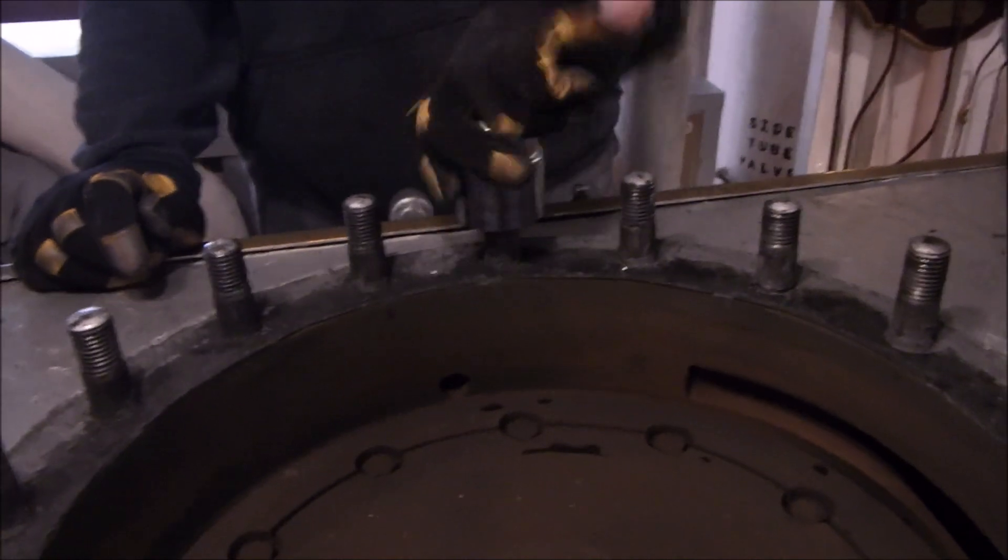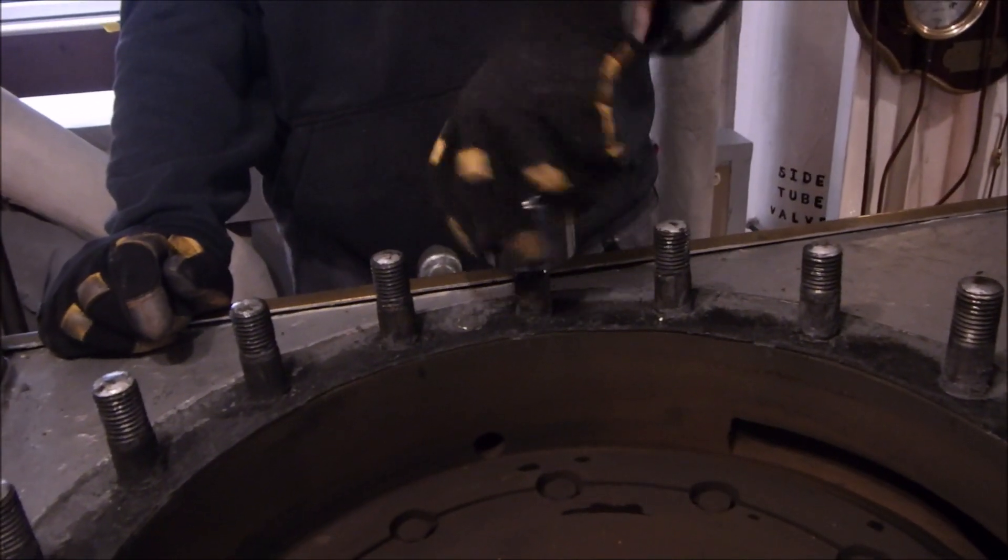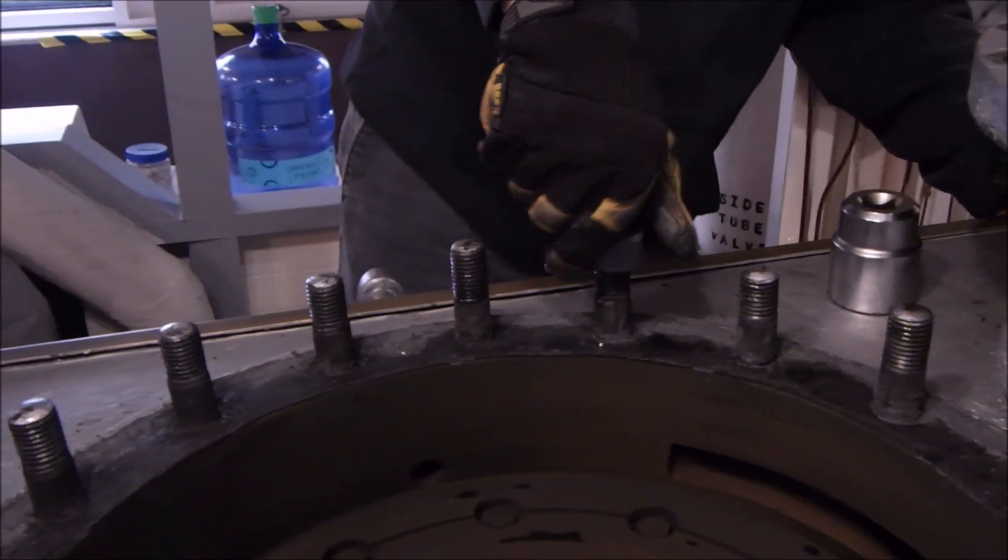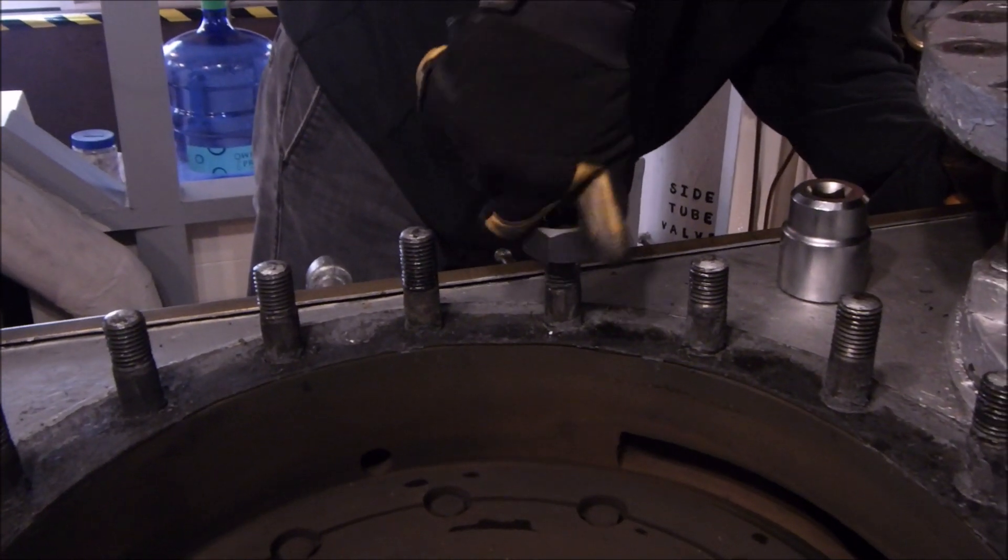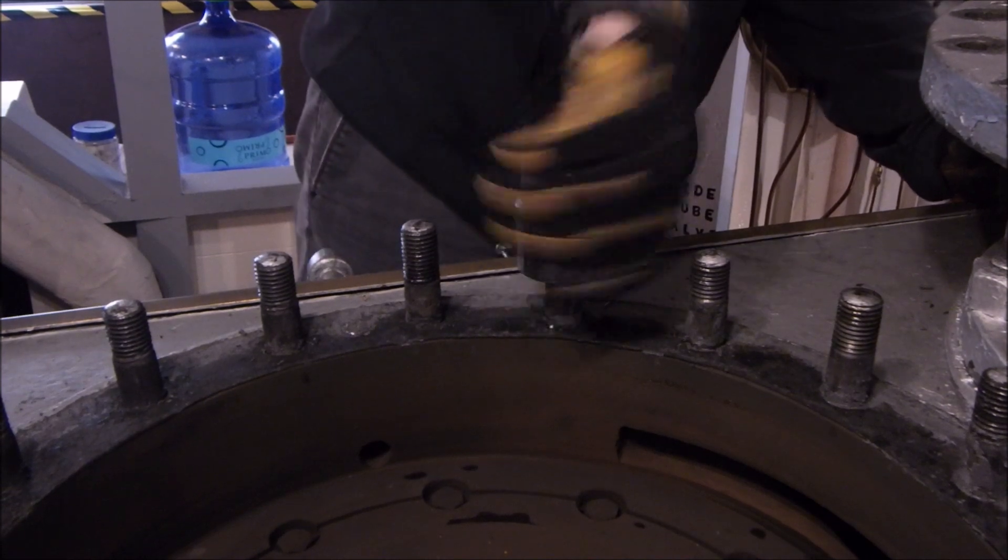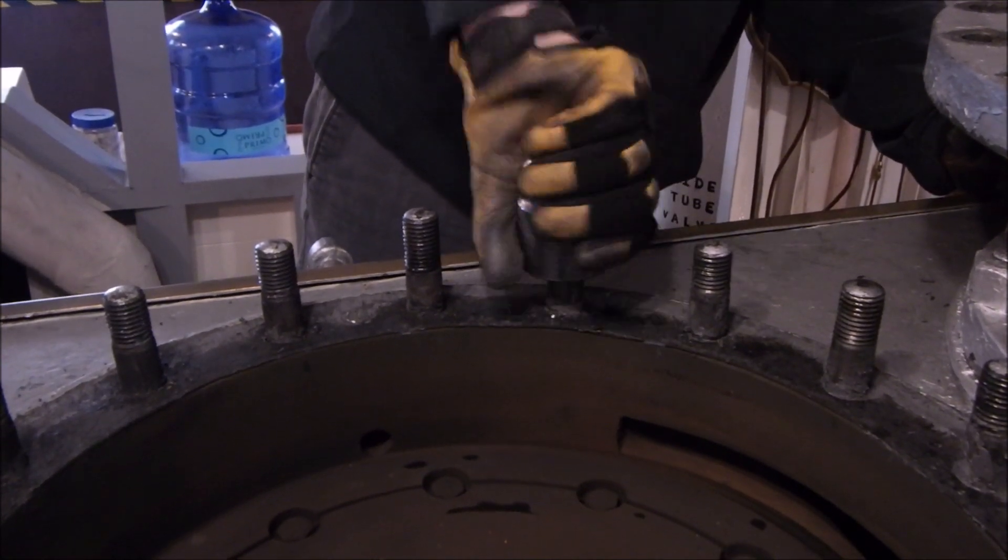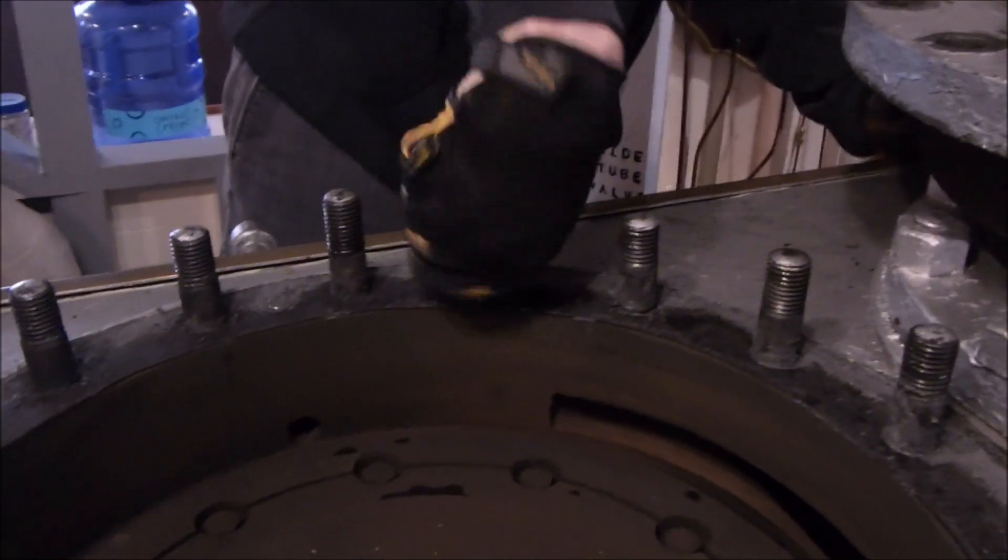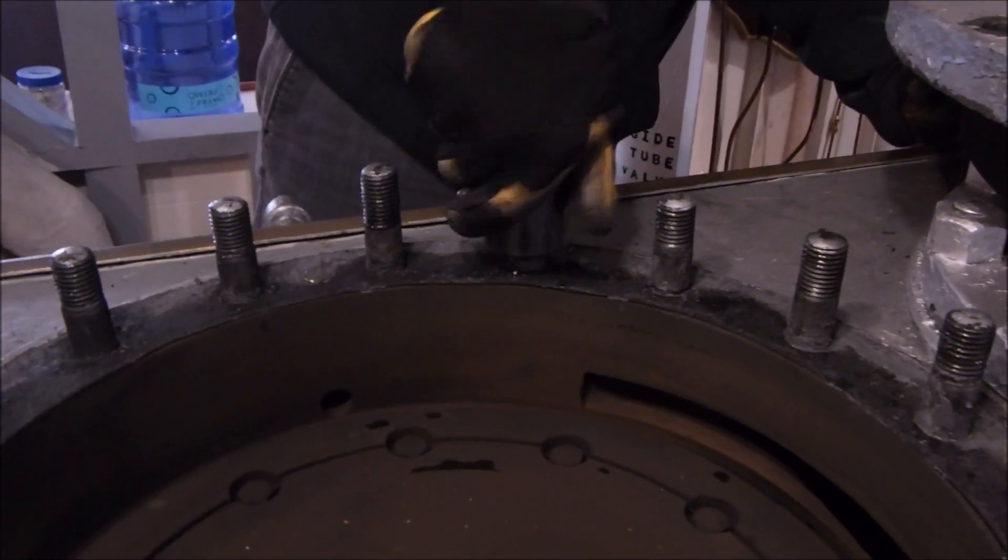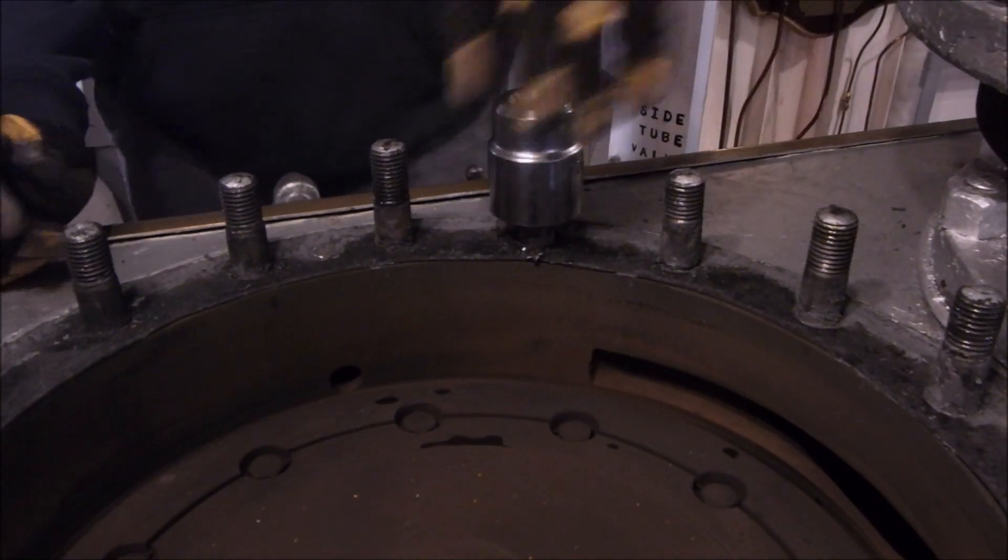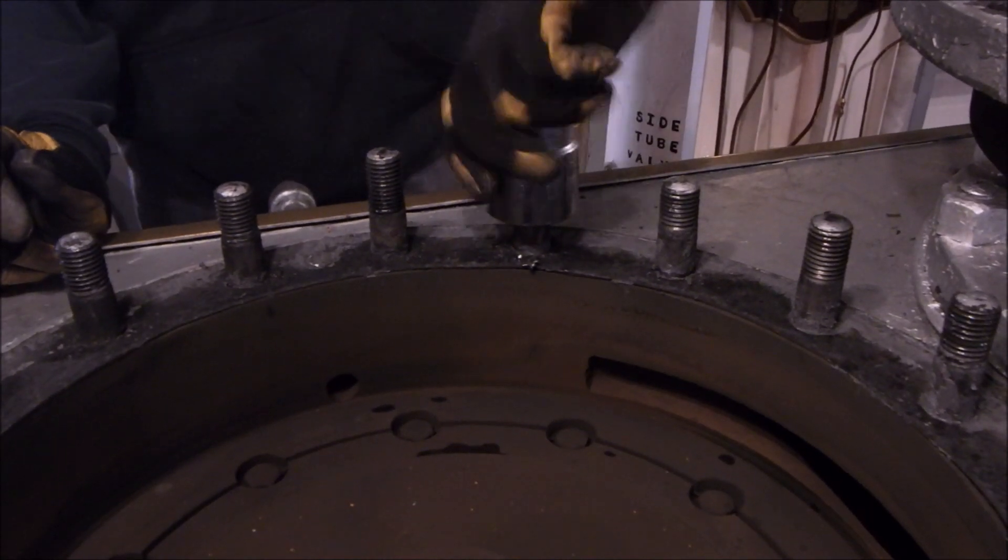What we're doing here, we have what's called a die nut and it's just being spun onto all of these studs to clean the threads out. These threads have many years of mostly never-seize built into the threads, so it's nice to clean them before we put the head back on. The silver paint does get in the very tops of the threads that stick above the nuts. You're probably just cleaning off a couple decades of never-seize.